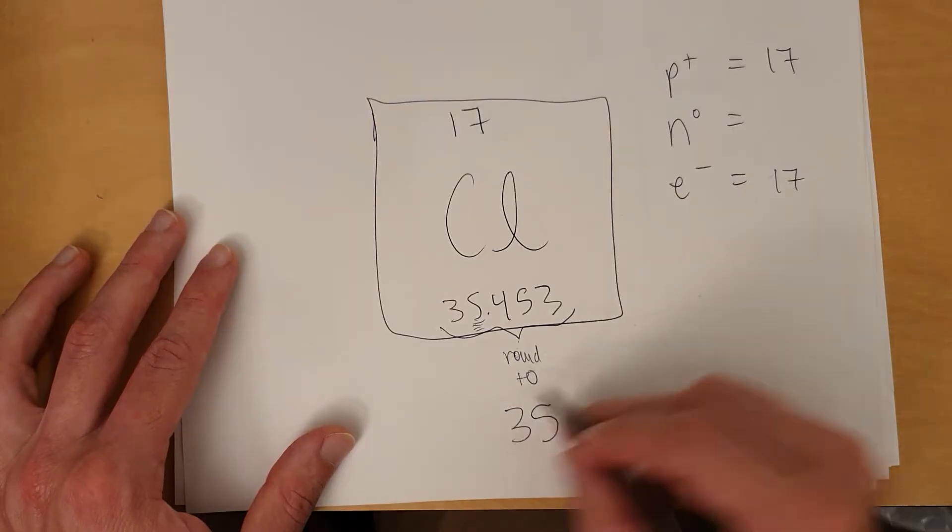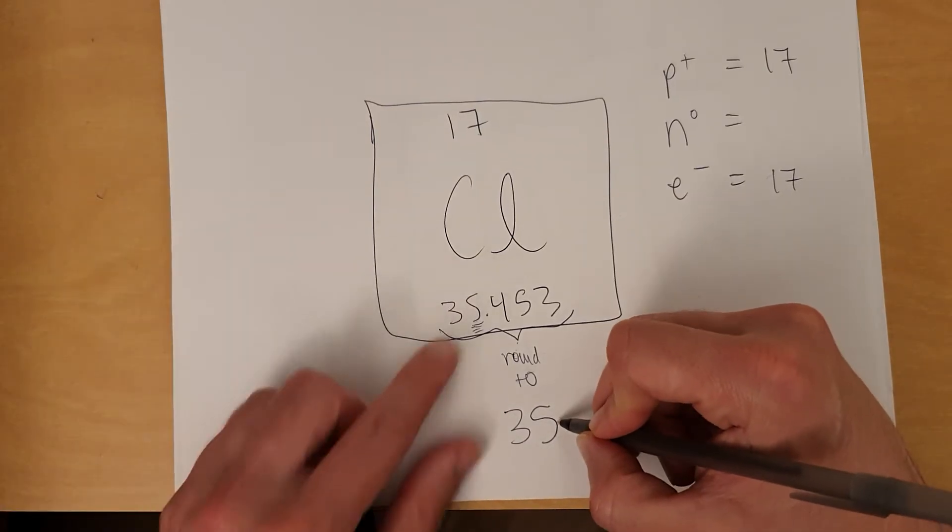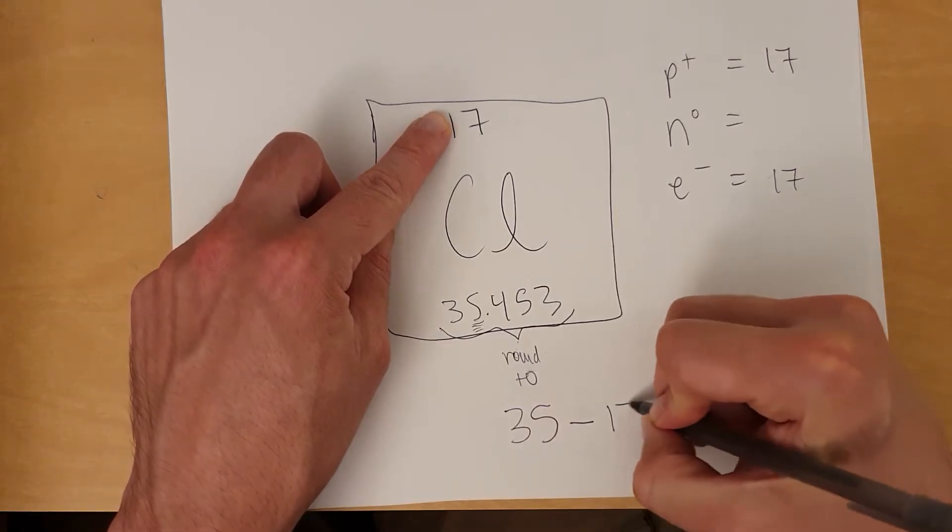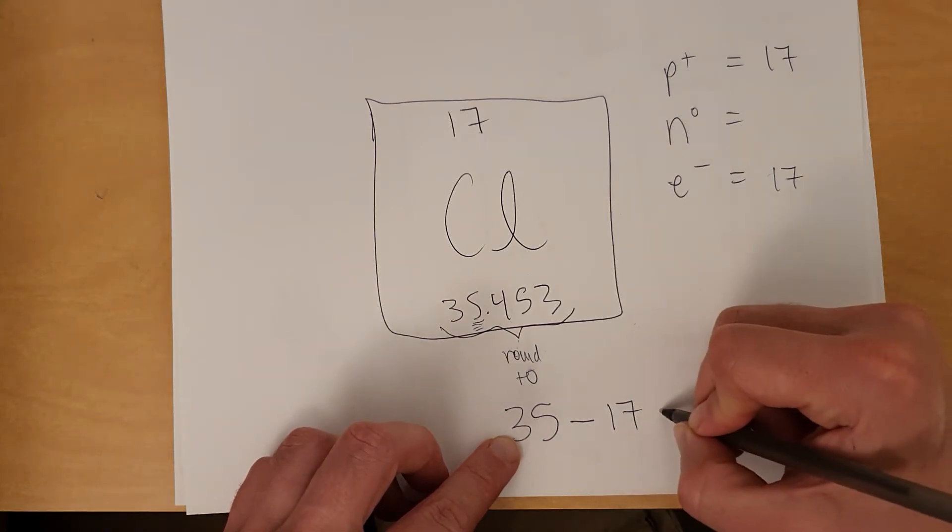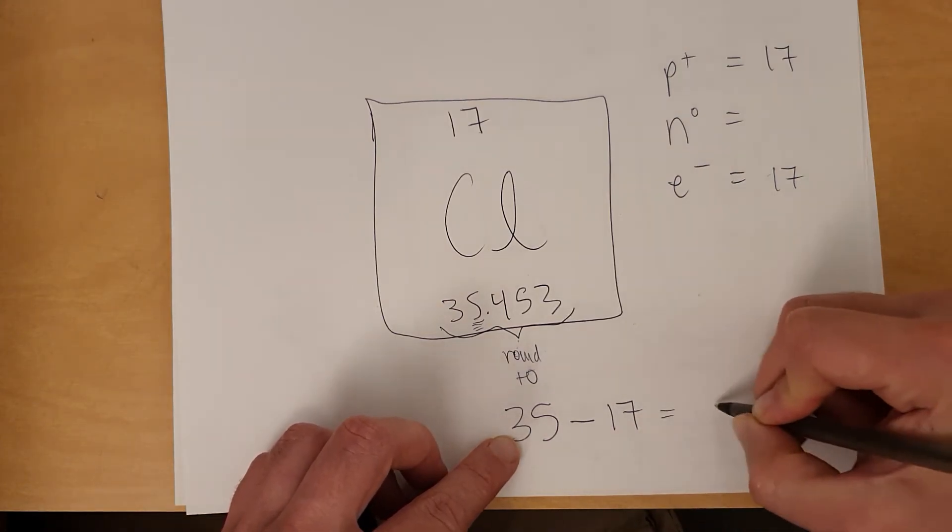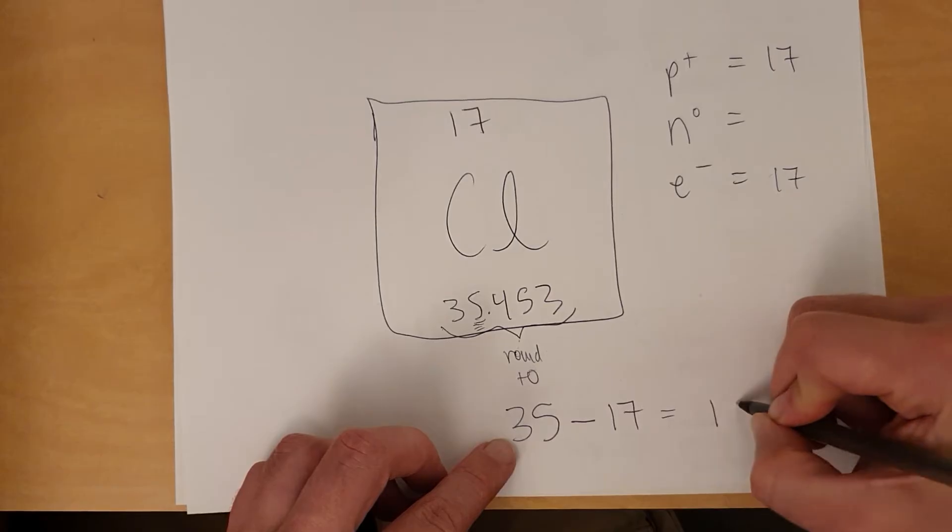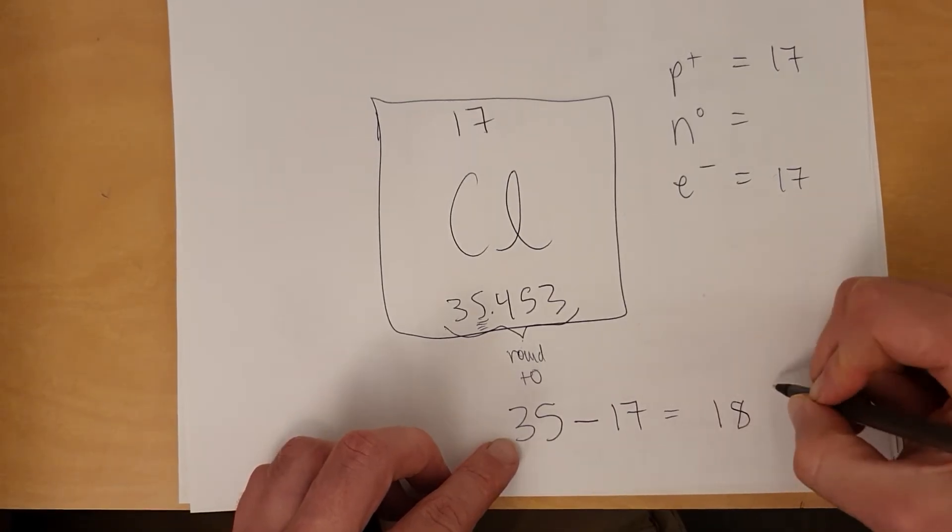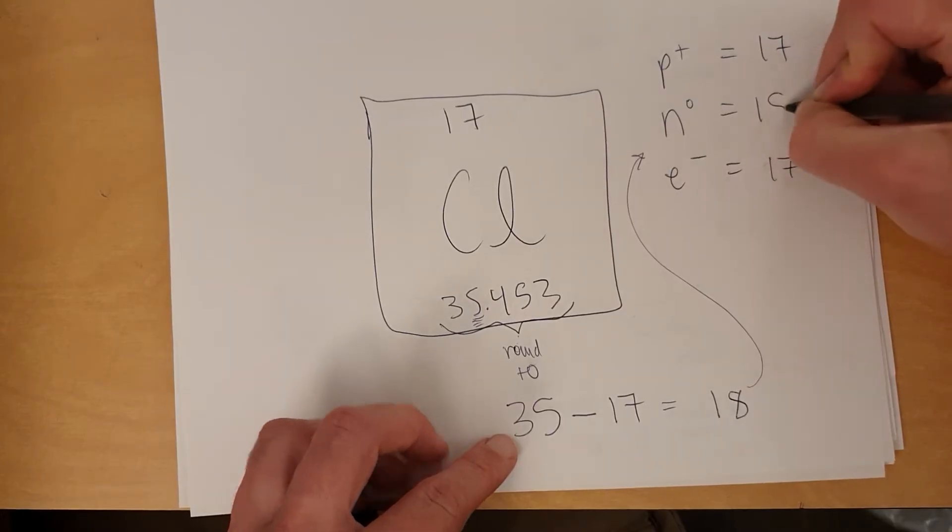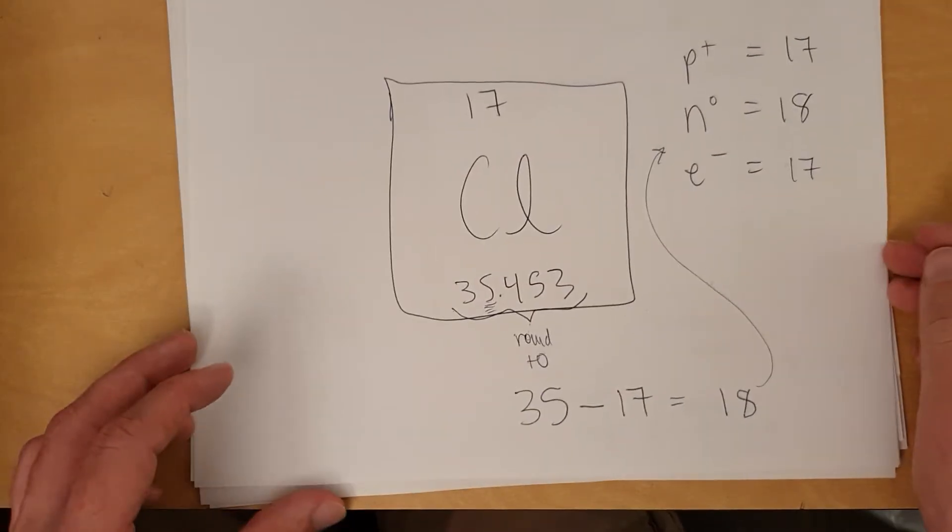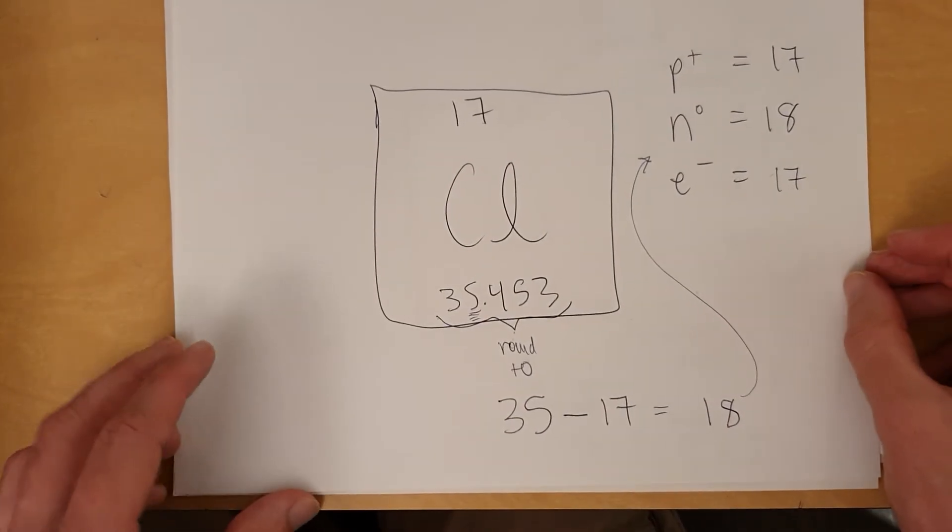So having said that, I'm going to take 35, which this rounds to, minus this number, 17, because there's 35 things in the nucleus. 17 of them are protons, which 35 minus 17 gives 18, and that's the number of neutrons. Alright, that's how it goes.